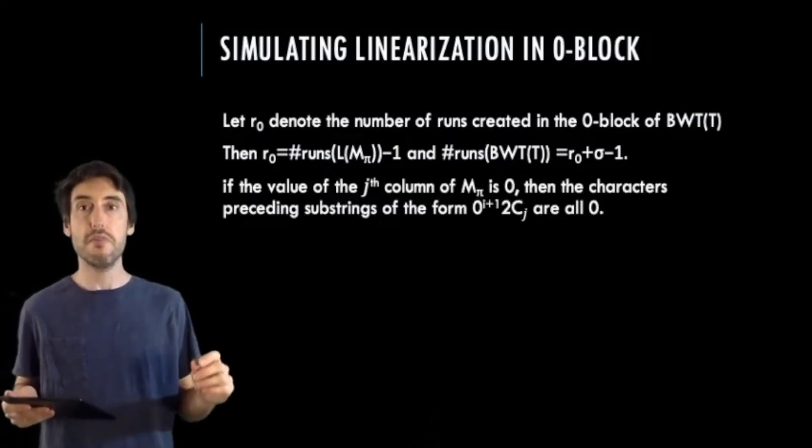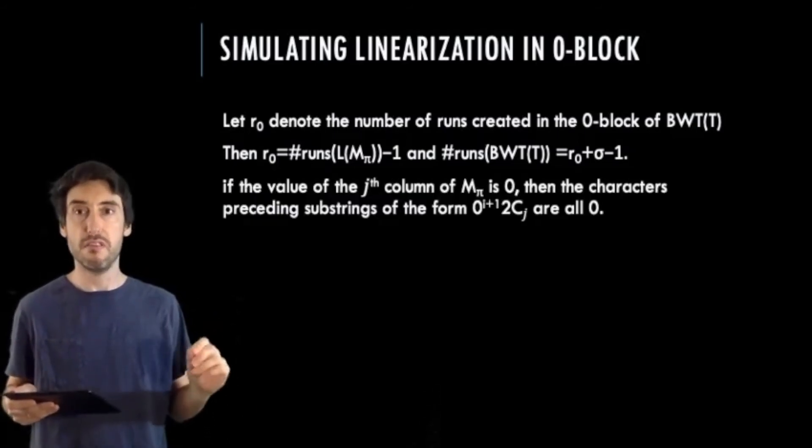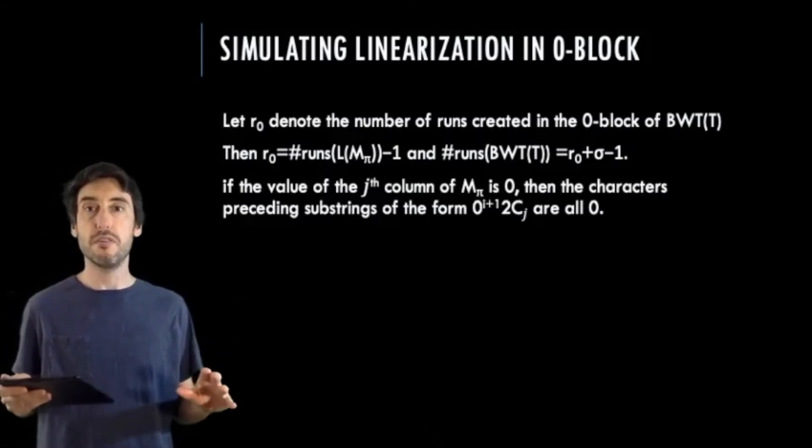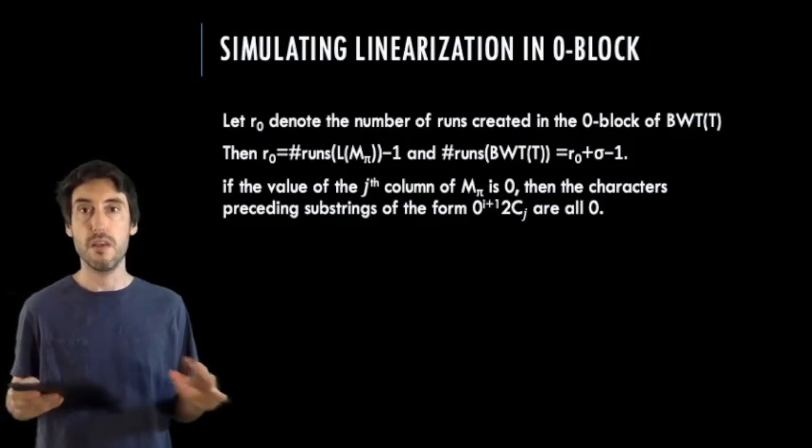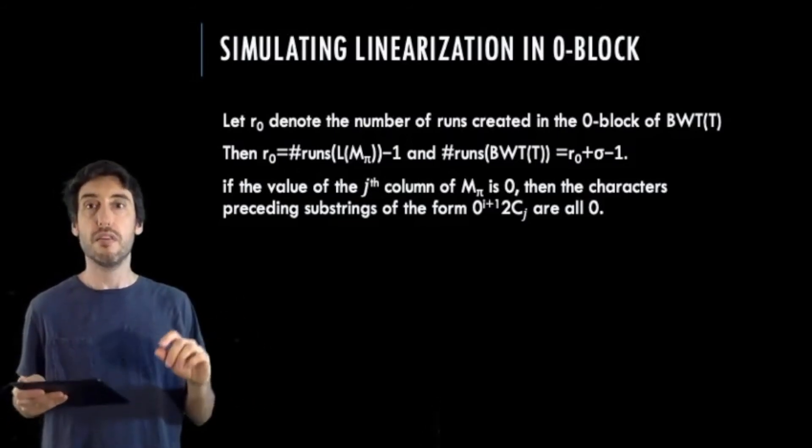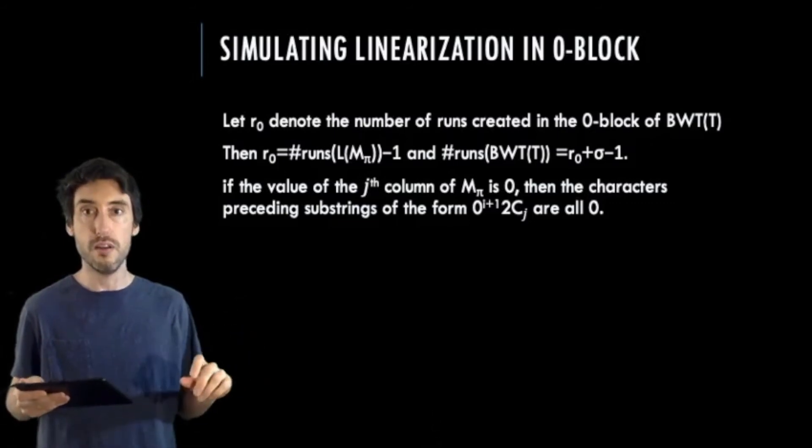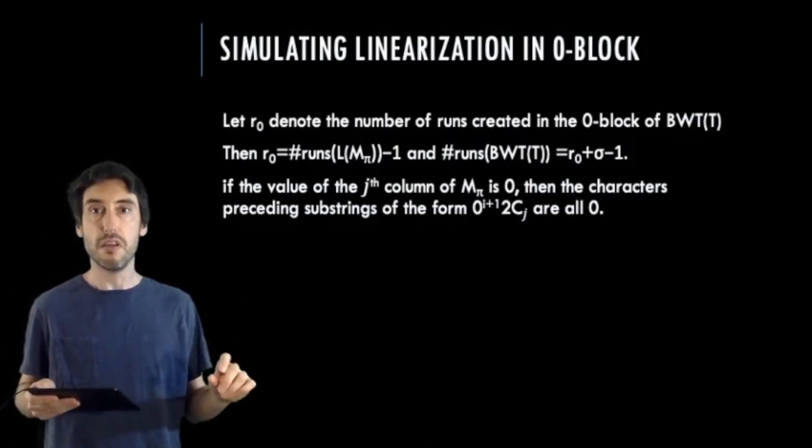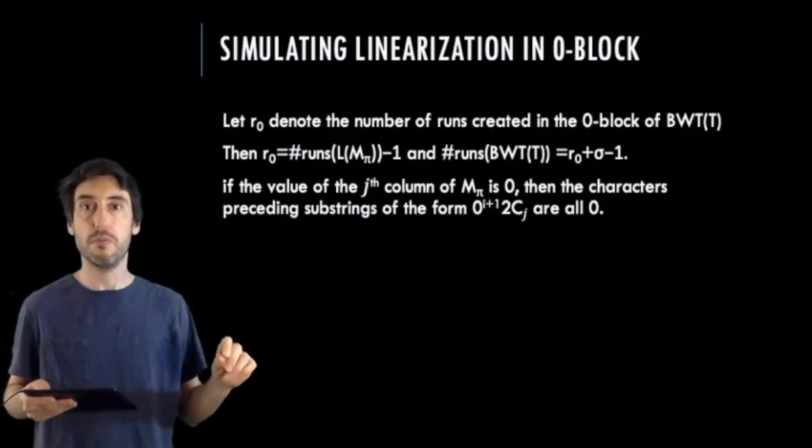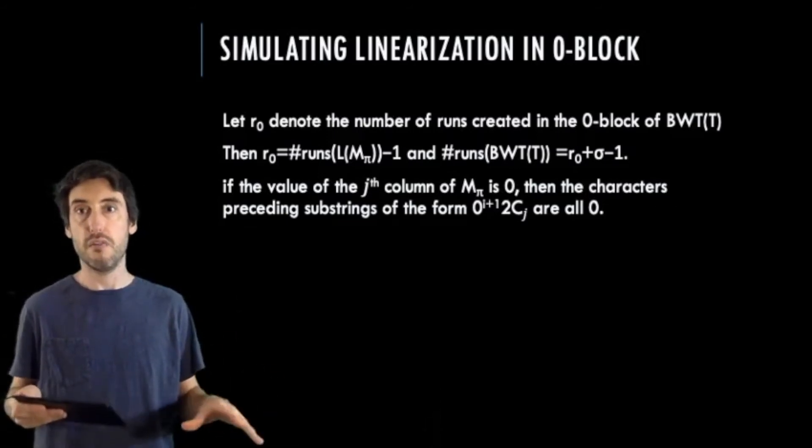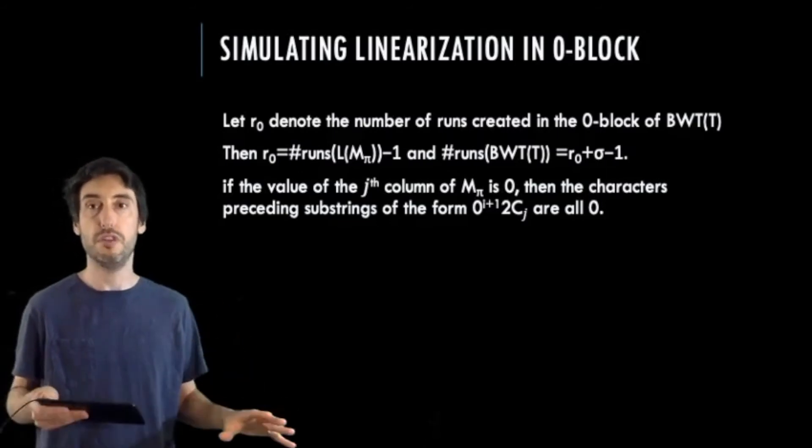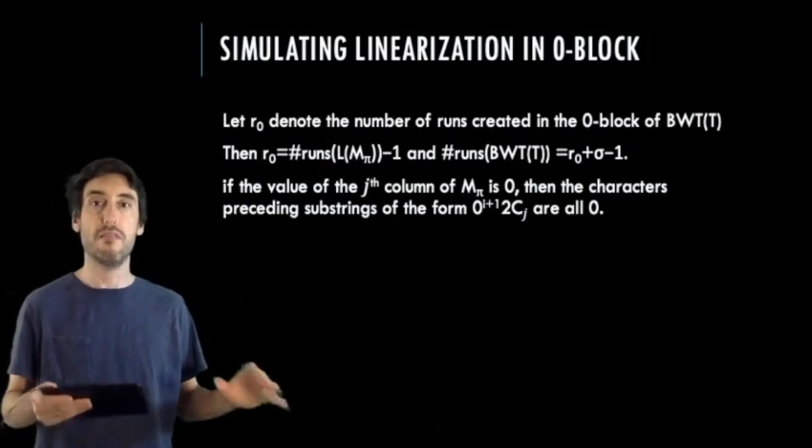First, if the ith value occurring in the jth column of m is 0, then the characters preceding substrings of the form 0 to the i plus 1 2 cj are all 0. If the ith value occurring in the jth column of m is 1, then there exists a single substring of the form 0 to the i plus 1 2 cj, which is preceded by a 1, and the remaining substrings of the form 0 to the i plus 1 2 cj are all preceded by 0.